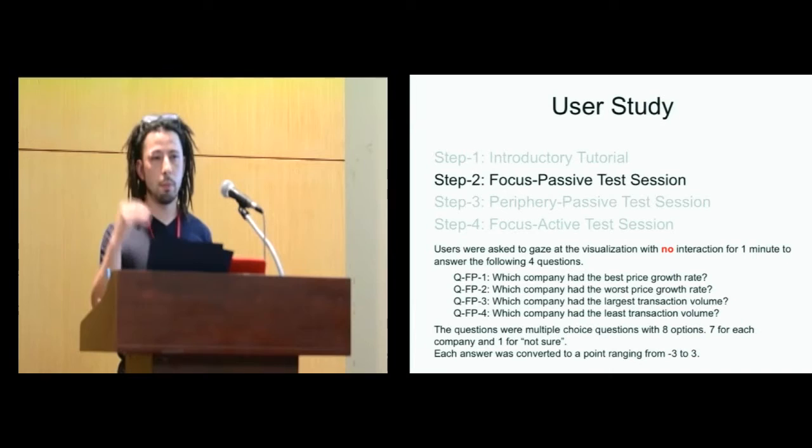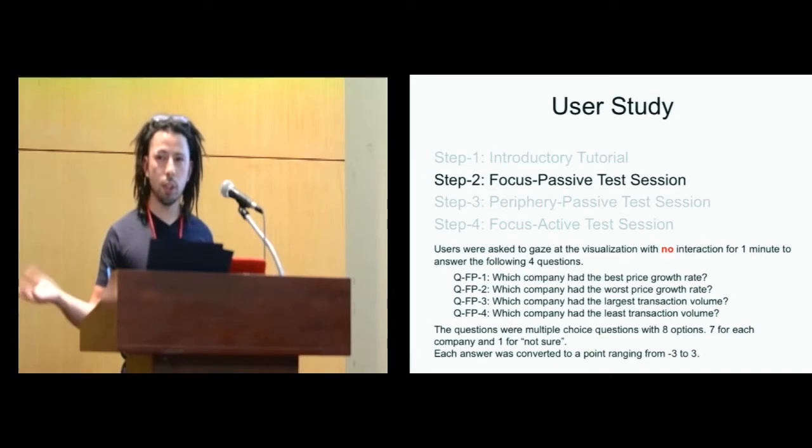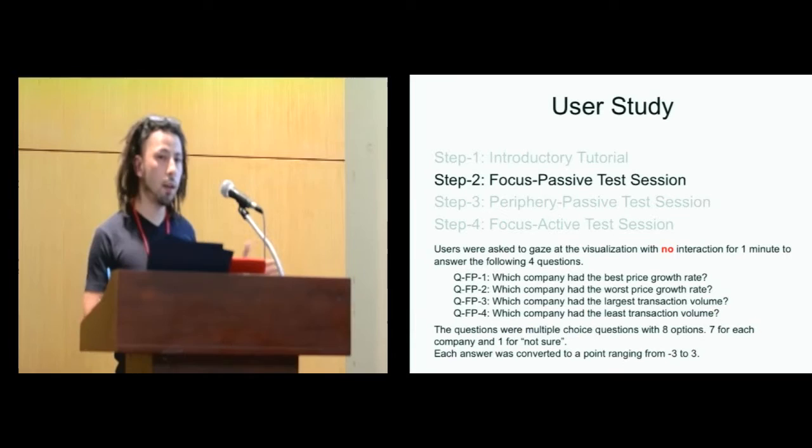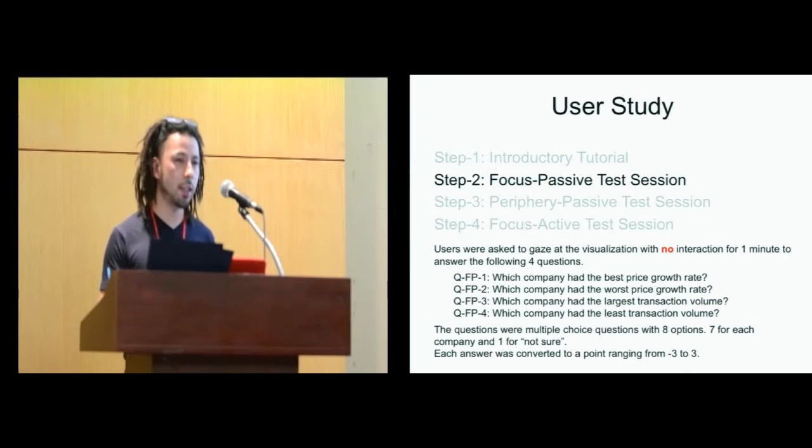Which is basically, which is the best growing company, which is the worst growing company, which company had the most transaction, which company had the least transaction. So pretty basic questions. And then we would compile the correctness of the user into minus 12 to 12 points. There's a scheme that we will compile and then give it an aggregated score, which ranges from minus 12 to 12.